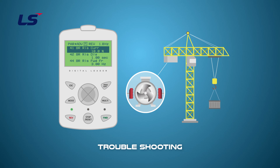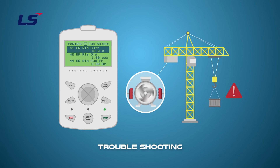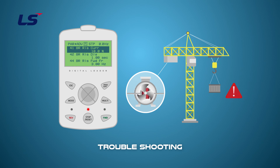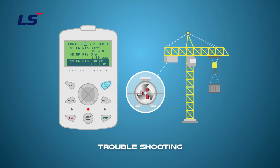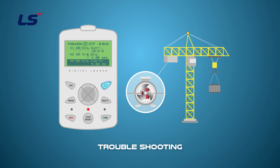Also, there may be situations when the load comes down momentarily and then goes up. This situation occurs when there are large loads operating with not enough torque. In this case, increase the opening frequency slightly to allow starting after achieving enough torque.